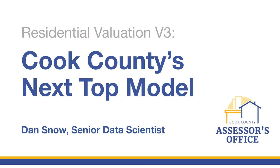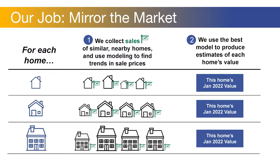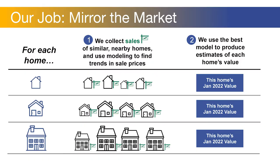This is V3 of this model. V2 I presented last year, and this is going to be in the format of a changelog — the major improvements that we've made since V2. The Assessor's Office, our job is to mirror the market. It means that we are trying to determine the value of unsold property by looking at the sales, the real sales of similar properties. And we do that with a huge statistical model that ultimately estimates a single value for each property in the entire county.